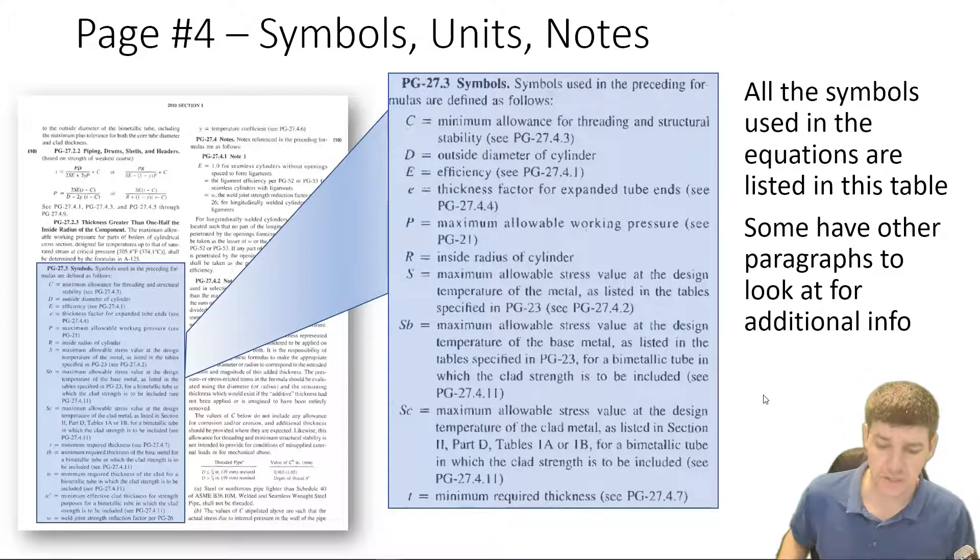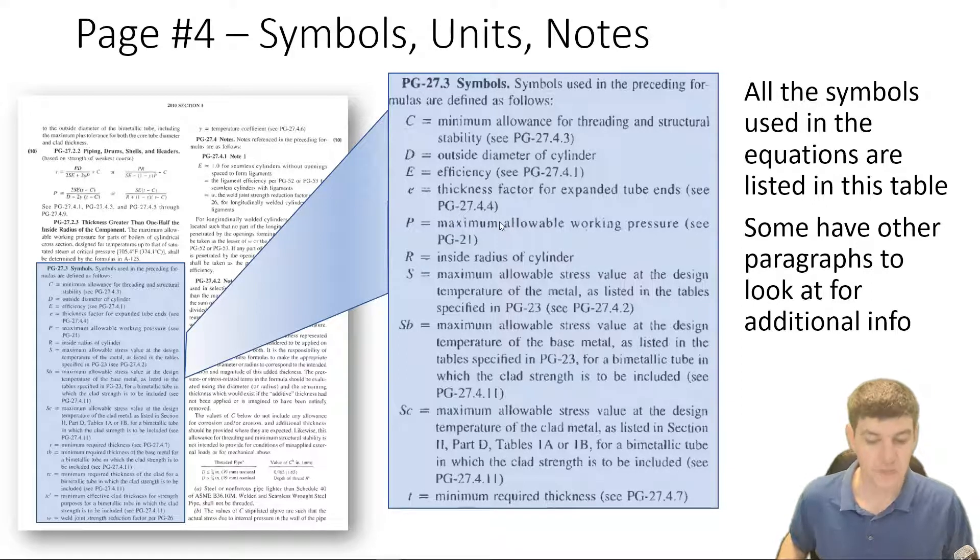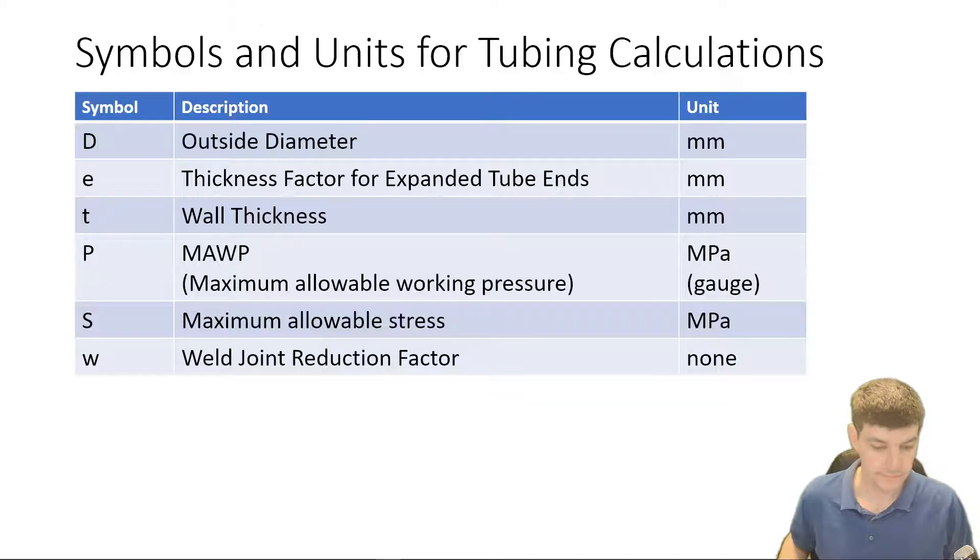In addition, some of these have spots where it references more information. So, for instance, we're going to look at one here, the thickness factor for expanded tube ends, a little later. And we're going to be referenced to another section of the code to get more information about that. So, CPG 27.4.4.